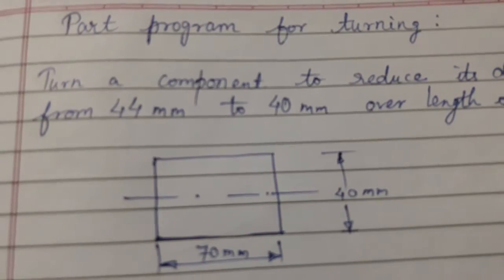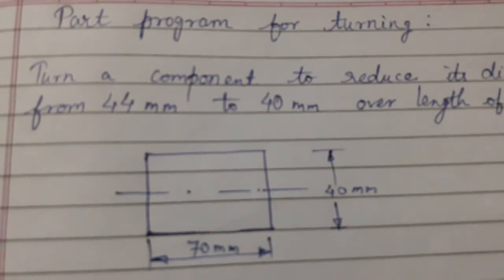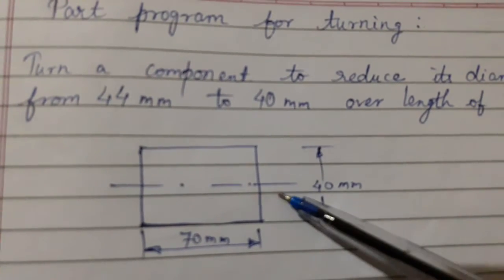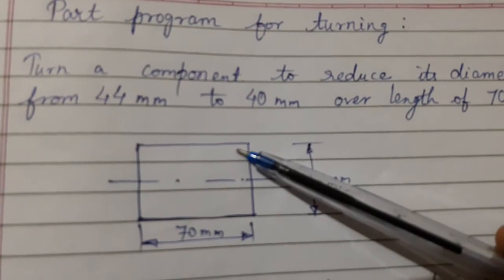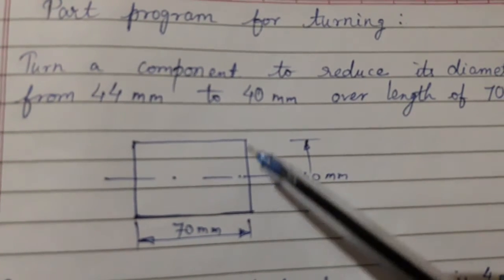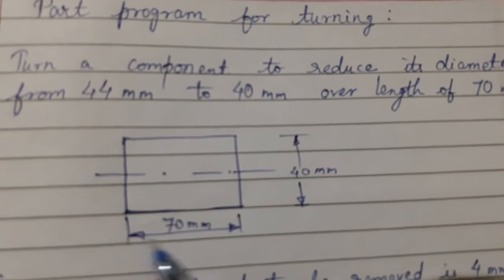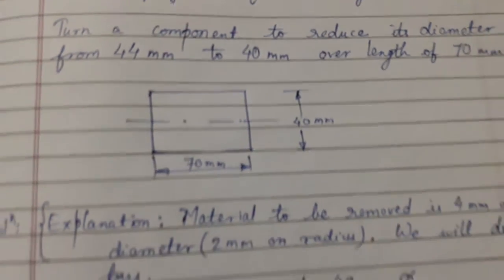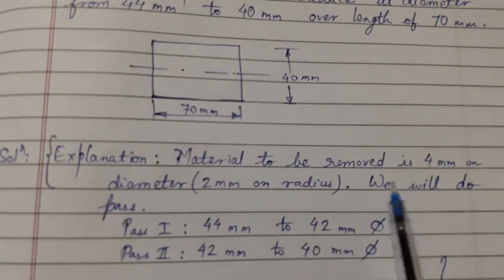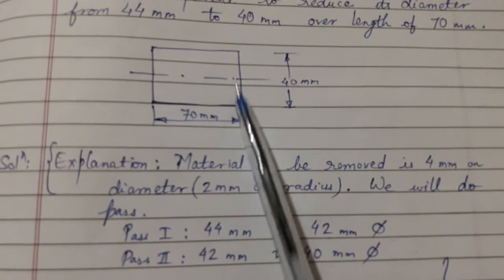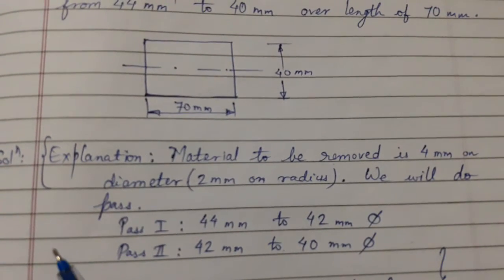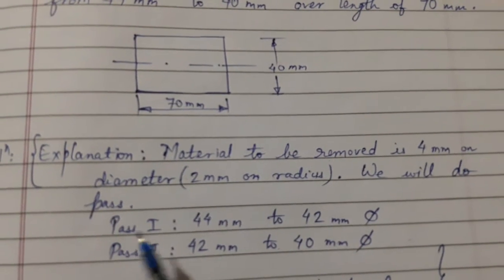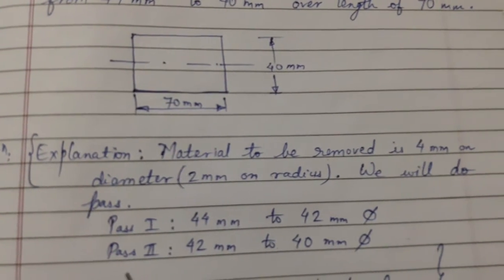Hi friends, today's topic of discussion is a part program for turning operation. We need to turn a component to reduce the diameter from 44 to 40 mm over a length of 70 mm. The material to be removed is 4 mm on diameter, which means 2 mm on radius. We will do this in two passes.